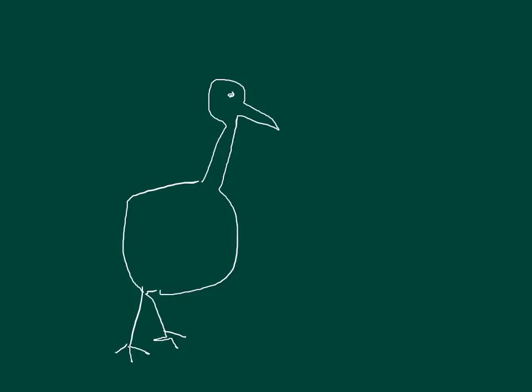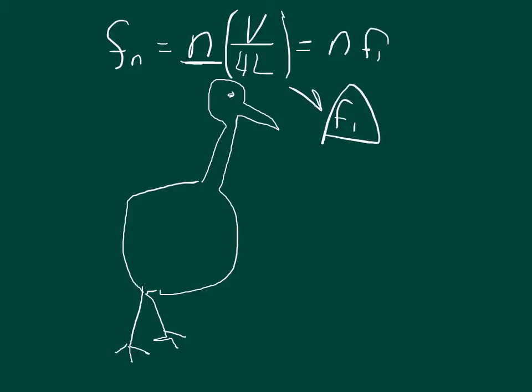In order to find the lowest resonant frequency possible, we can use the equation for a pipe open at one end, which is the frequency at a particular resonance N is equal to that resonance times the velocity over 4L, which is also equal to N times F1. Because if N is equal to 1, if we're on the first resonance, then this is going to be equal to F1. So in all cases, F1 times N or velocity over 4L are the same thing.